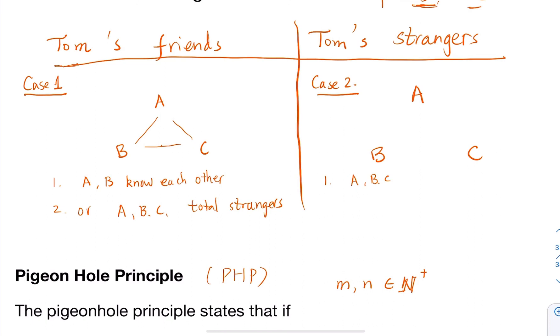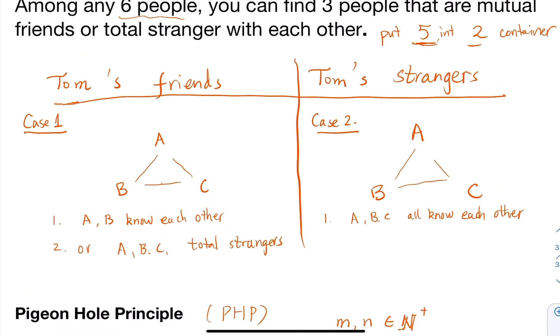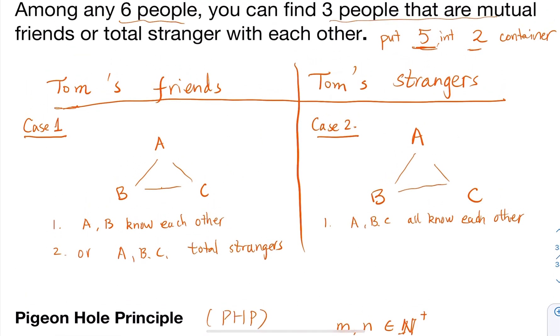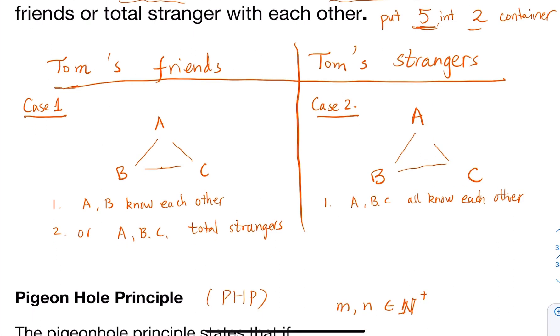What if B and A are strangers, or some pair are strangers? Then Tom, A, and B - these three people are totally strangers with each other. Or if one pair are strangers among A, B, C...